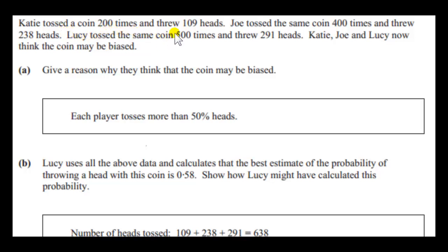Katie tossed a coin 200 times and threw 109 heads. Joe tossed the same coin 400 times and threw 238 heads. Lucy tossed the same coin 500 times and threw 291 heads. Katie, Joe and Lucy now think the coin may be biased.